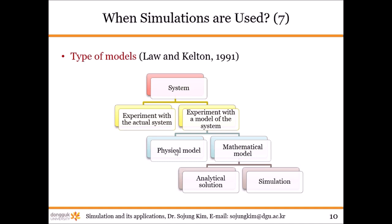There are many types of models. Under a given system, you can either experiment with the actual system or experiment with a model of the system. There are two categories of modeling: one is a physical model, another is a mathematical model. A physical model is a replica of the actual system. A mathematical model is based on equations. Let's look at the definitions of each.